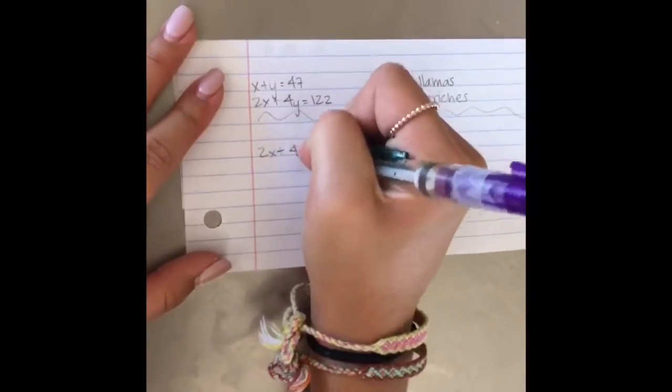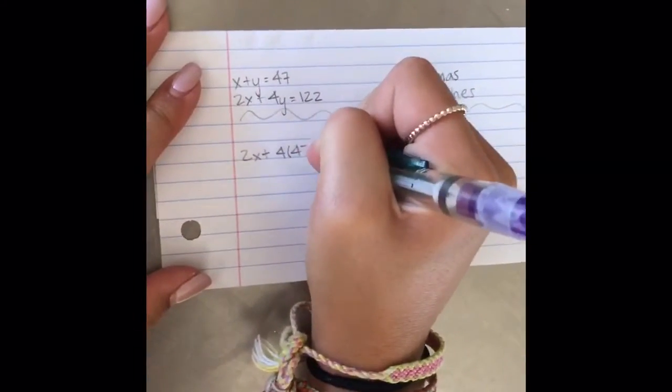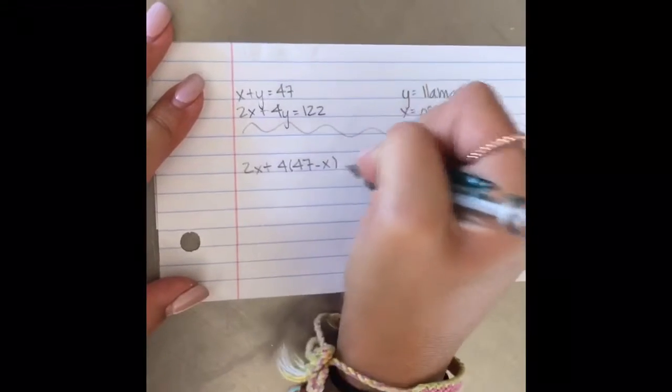First, we substituted 47 minus x for y because when we isolated y, that's what we got.